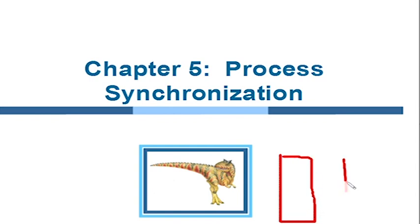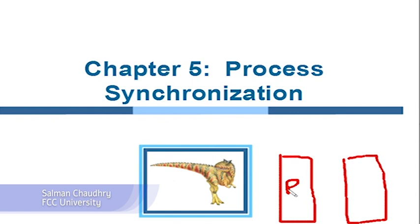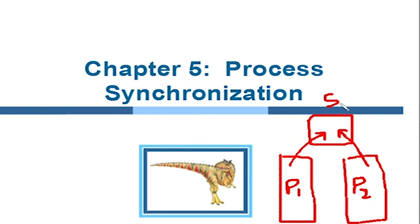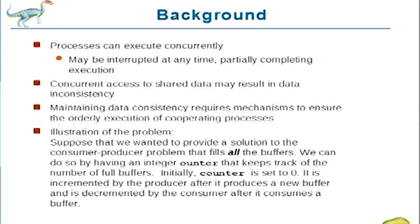Imagine there are two processes — process one and process two — and there is shared data which both of them are trying to access and modify. We have to make one of them wait for the other if the other is busy doing the modification of this shared data. This is called the problem of process synchronization, which we encounter a lot in operating systems.